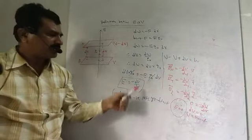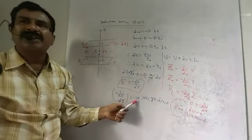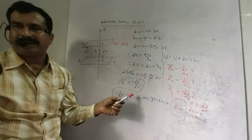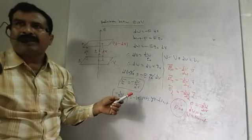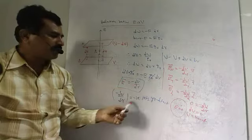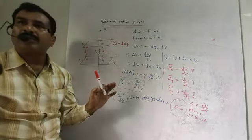So the equation E equals minus DV by DR is nothing but the negative potential gradient. Therefore, E is equal to the negative potential gradient.